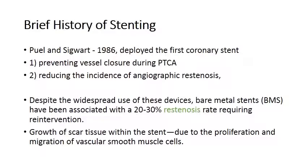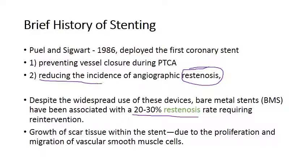The first stenting procedure was performed in 1986 by Puel and Sigwart. It prevented vessel closure during angioplasty and reduced the incidence of angiographic re-stenosis — that is, re-growing of the plaque or stenosis afterwards. Despite the widespread use of these devices, bare metal stents have been associated with a 20% to 30% re-stenosis rate requiring re-intervention, so it was still occurring in about 20% to 25% of cases.